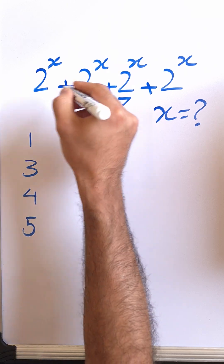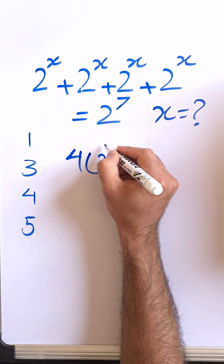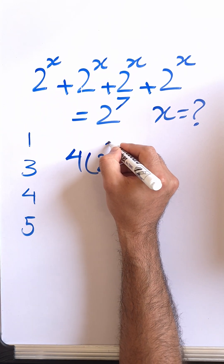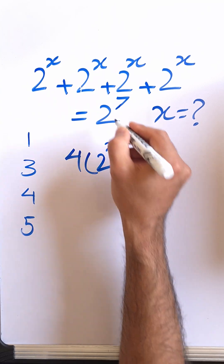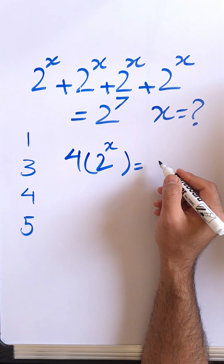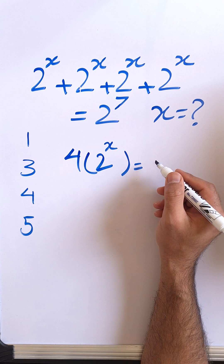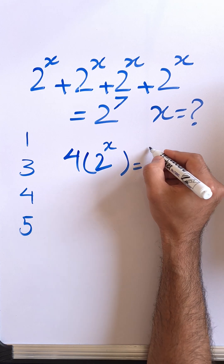It equals 4 times 2 to the power of x, which equals 2 to the 7, which is 128.